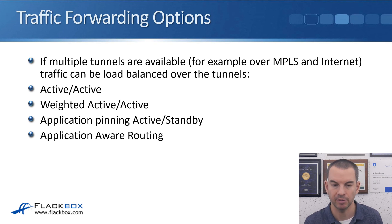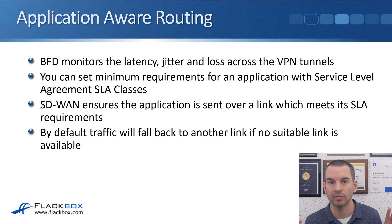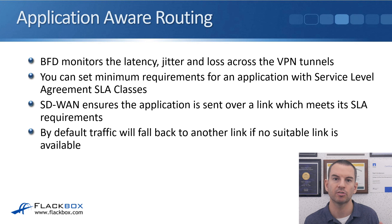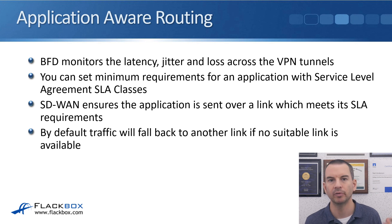SD-WAN also supports application-aware routing. BFD monitors latency, jitter, and loss across the different VPN tunnels, and you can set minimum requirements for an application using an SLA service level agreement class. SD-WAN ensures the application is sent over a link that meets its SLA requirements. For example, voice and video traffic can have required latency, jitter, and loss thresholds set to ensure call quality. SD-WAN monitors QoS statistics over links in real time and routes voice and video over the most suitable link. By default, traffic will fall back to another link if no suitable link is available — it won't be dropped, it will still go over the best available link at that time.